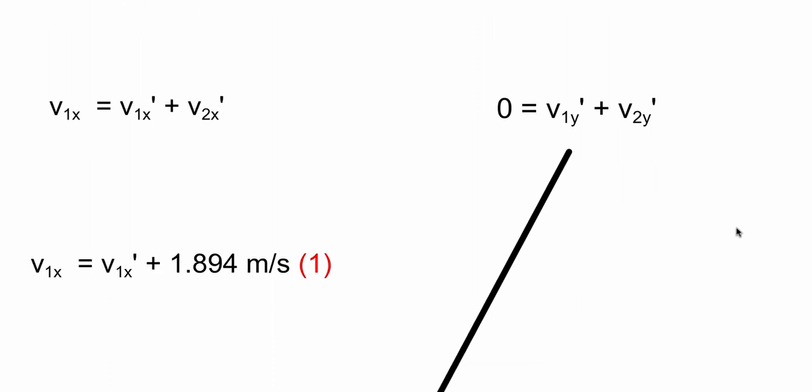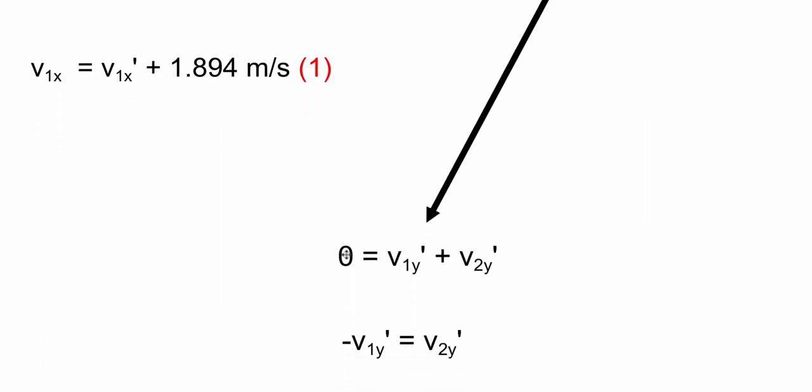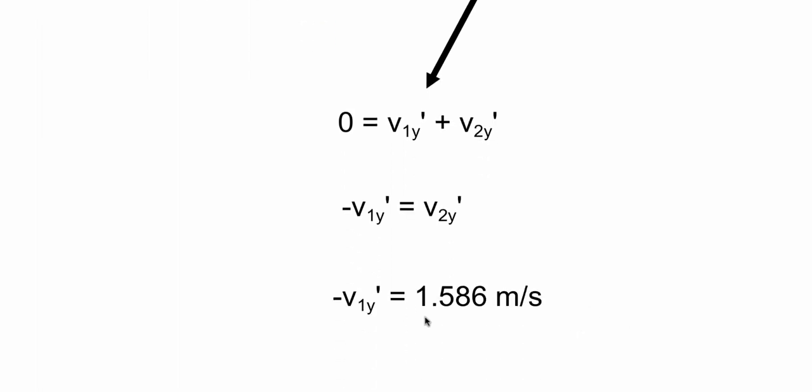Let's take a look at the y components. So, if zero is equal to v1y' plus v2y', and if I subtract the v1y' from both sides, I can get an equation that looks like this. And we actually have v2y' because we solved for that earlier, which is 1.586.